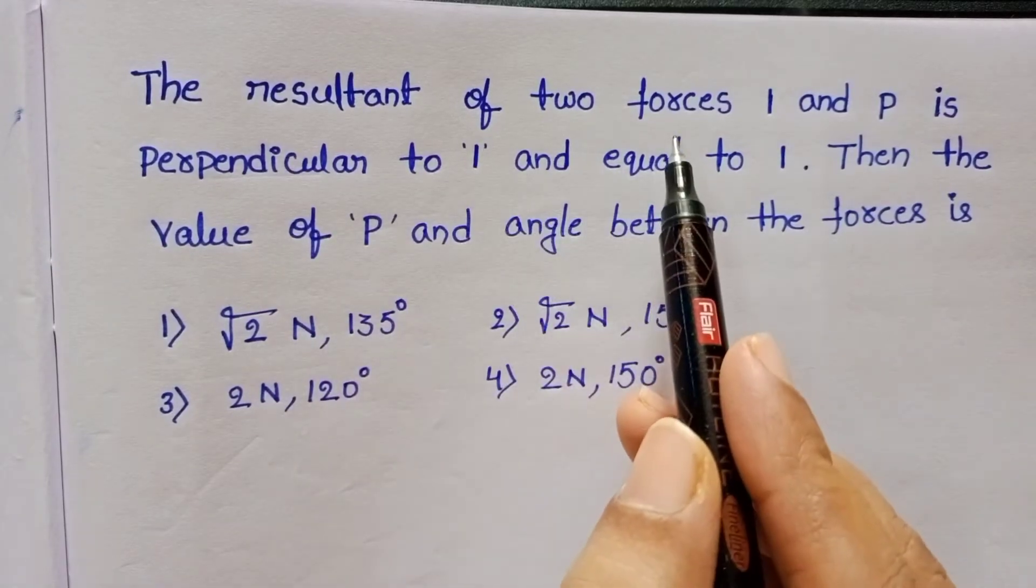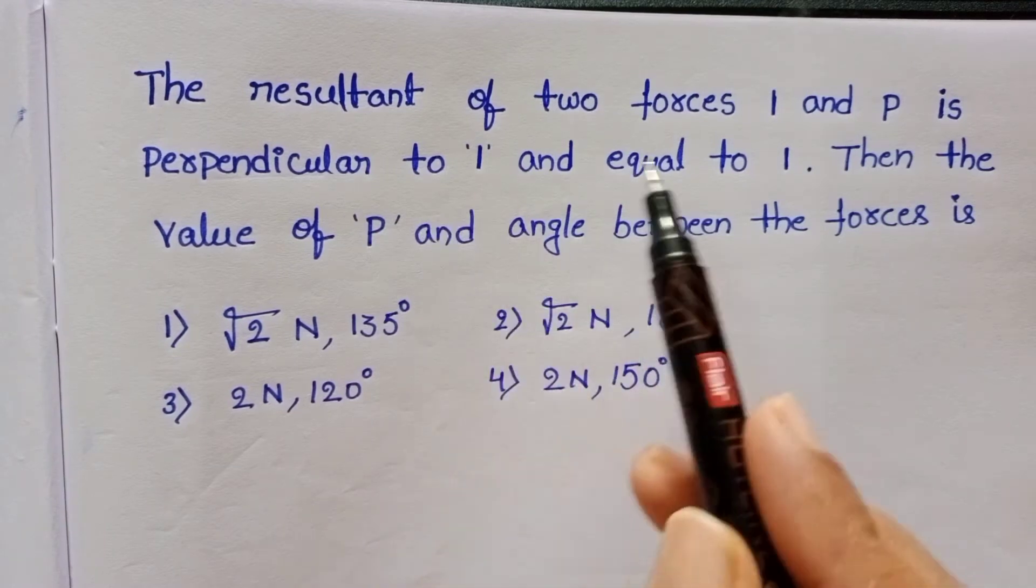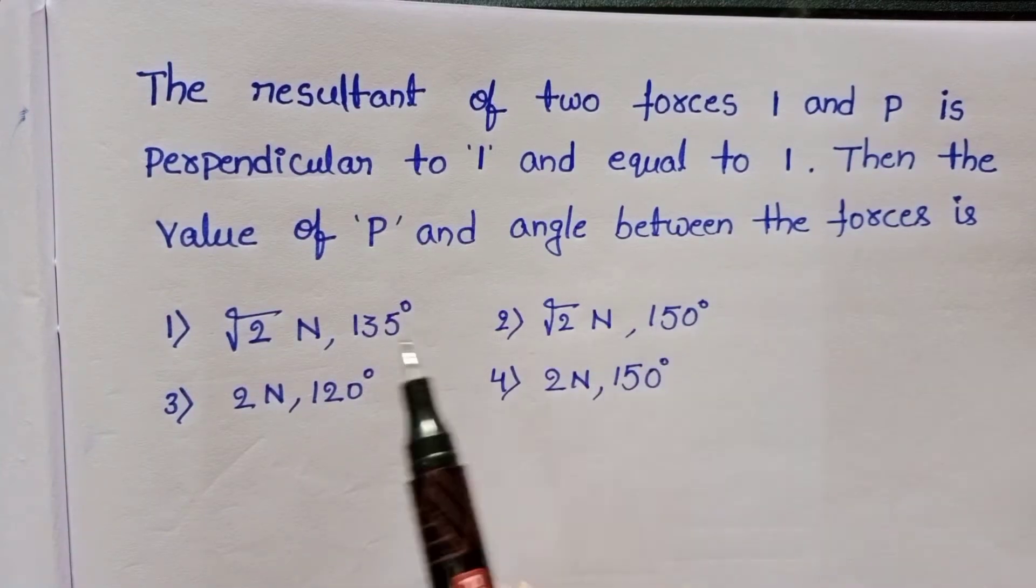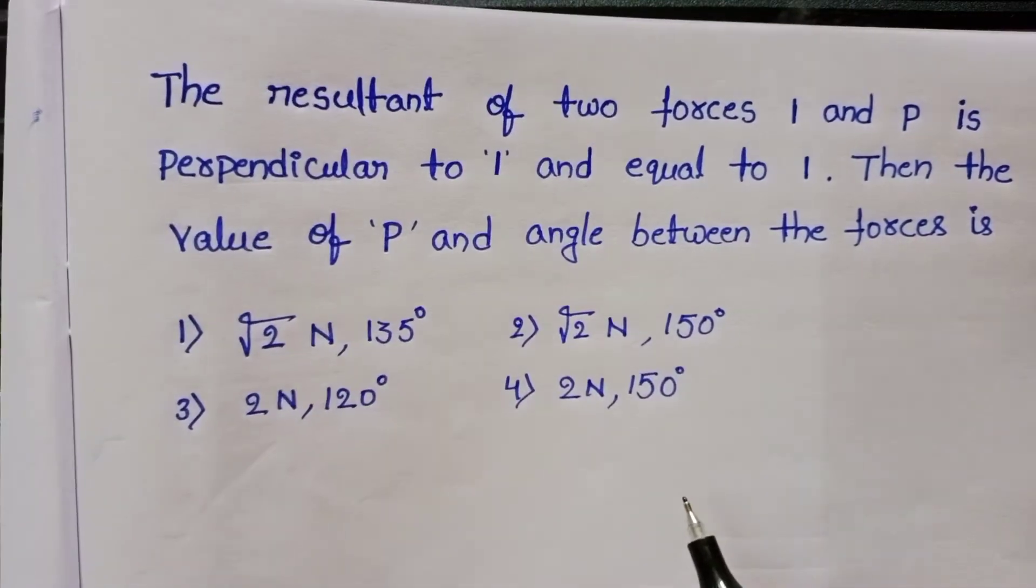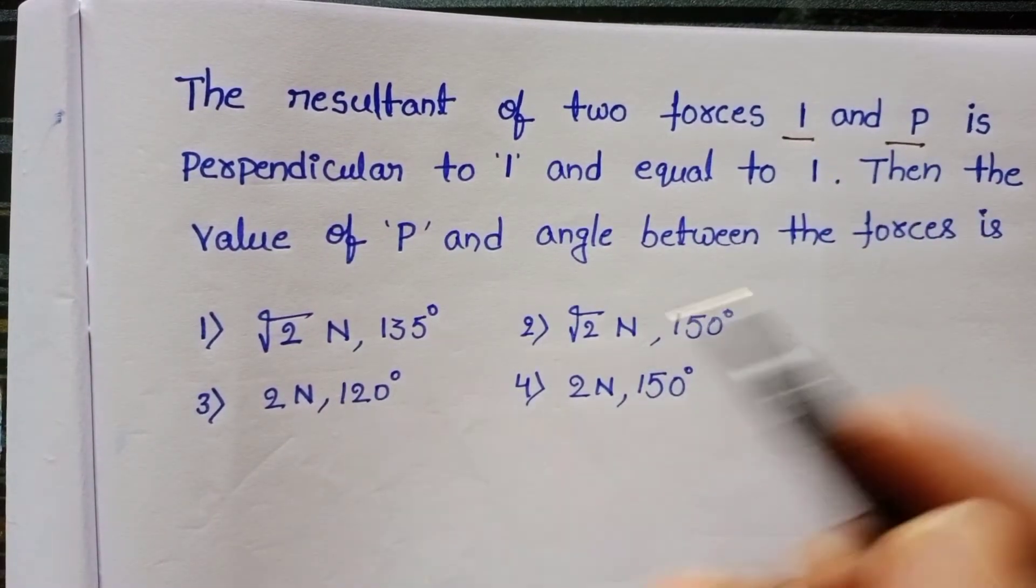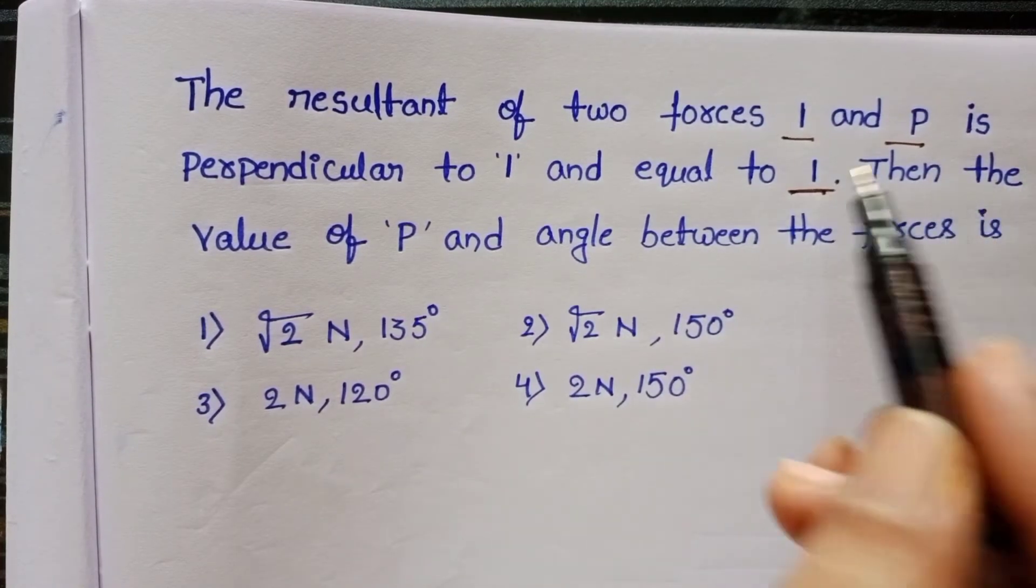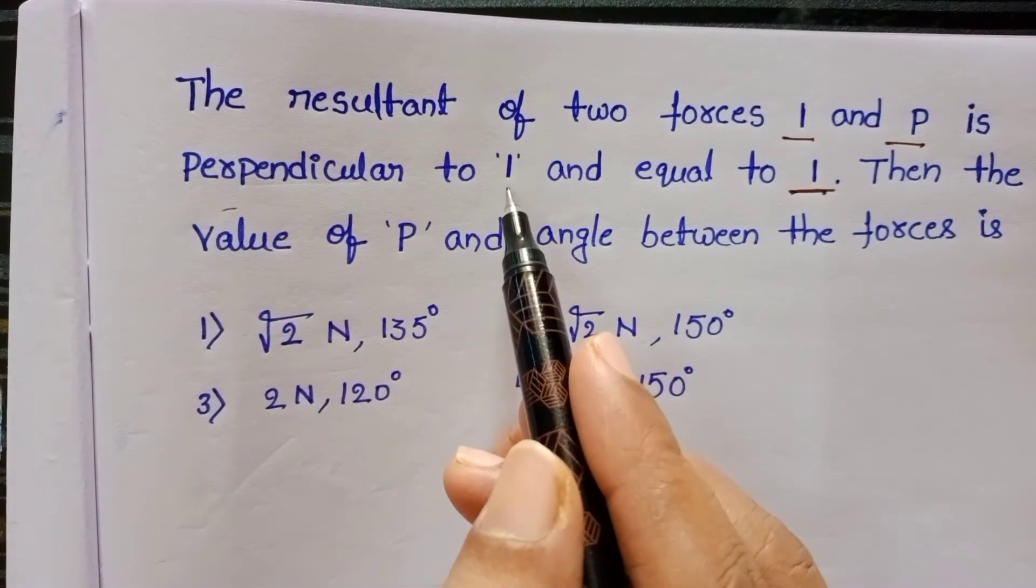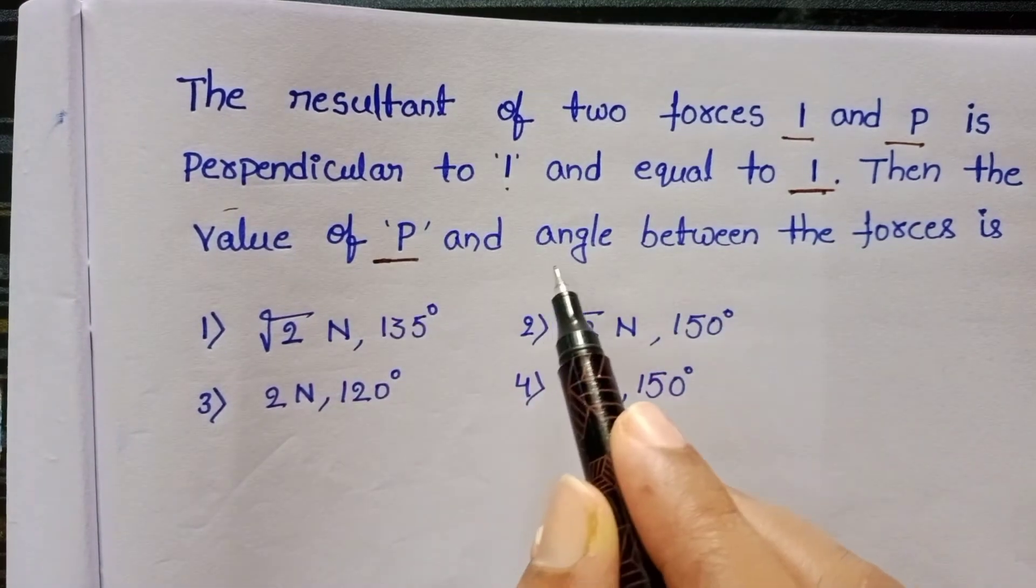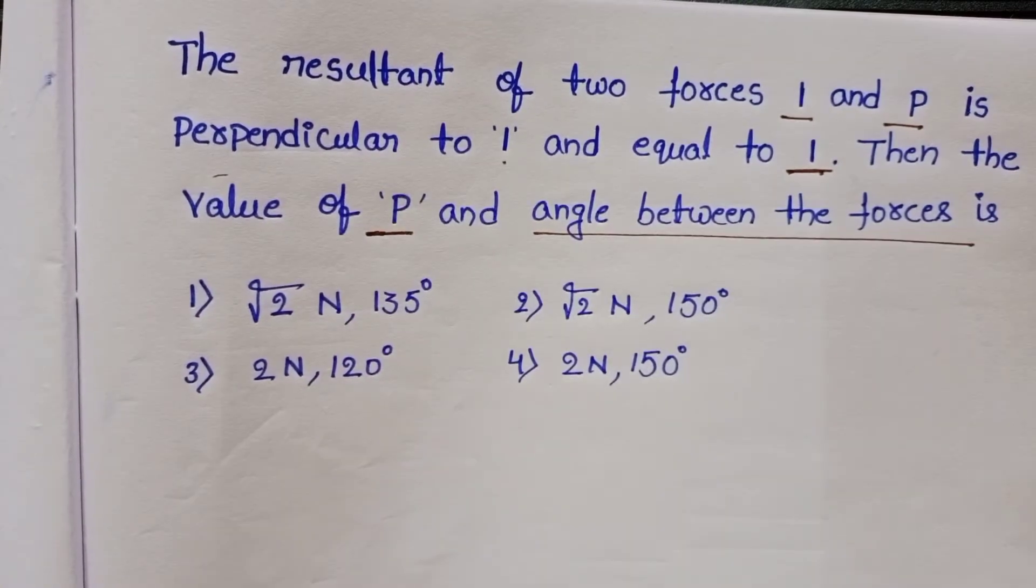The resultant of two forces 1 and P is perpendicular to 1 and equal to 1, then the value of P and angle between the forces is. Here two forces: first force is 1 and the second force is P. The resultant of these two forces is equal to 1 and this resultant is perpendicular to 1. In this question we have to calculate the value of P and angle between the forces.